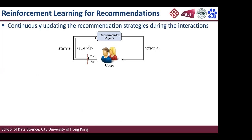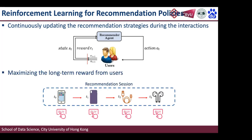When introducing RL for recommendations, there are two main advantages. First, the recommendation policy is updated continuously according to users' real-time feedback — if you purchase an item, the system receives a positive reward and reinforces that policy; if you skip an item, it receives a negative reward and avoids that policy. Second, RL considers long-term reward — rather than one purchase ending the session, recommending an iPhone might also lead you to buy a case, charger, and earphone. RL tries to maximize this kind of long-term reward.